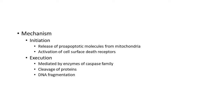Coming to the extrinsic or cell death receptor-initiated pathway: here, apoptosis is initiated by activation of cell death receptors which are present on the cell membrane. An example of a cell death receptor is tumor necrosis factor receptor type 1. Either way — through extrinsic or intrinsic pathway — the initiation occurs and the apoptotic process is started.